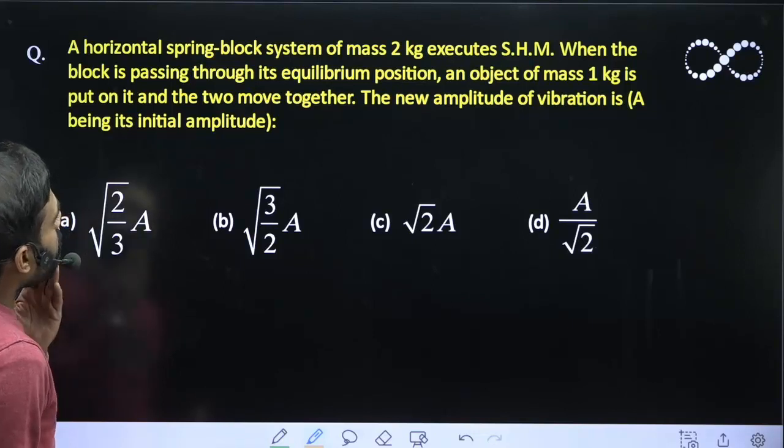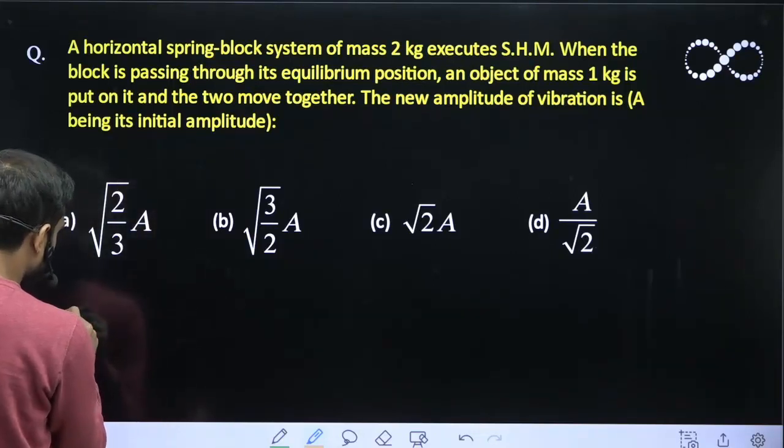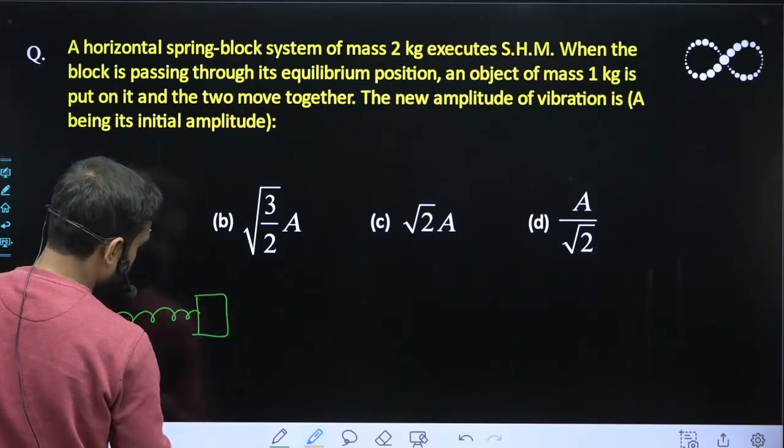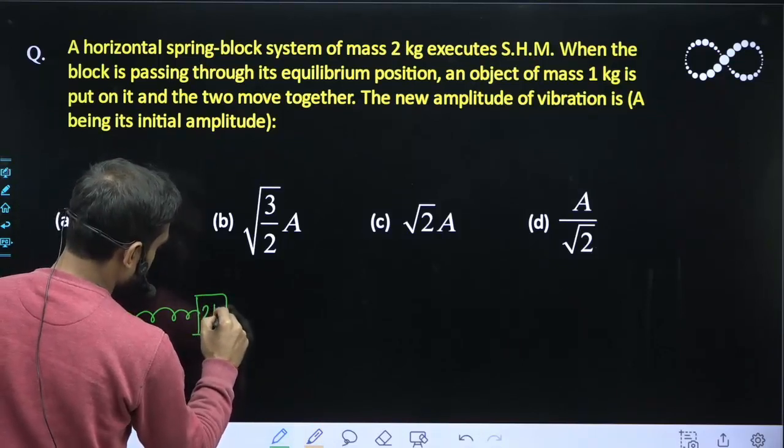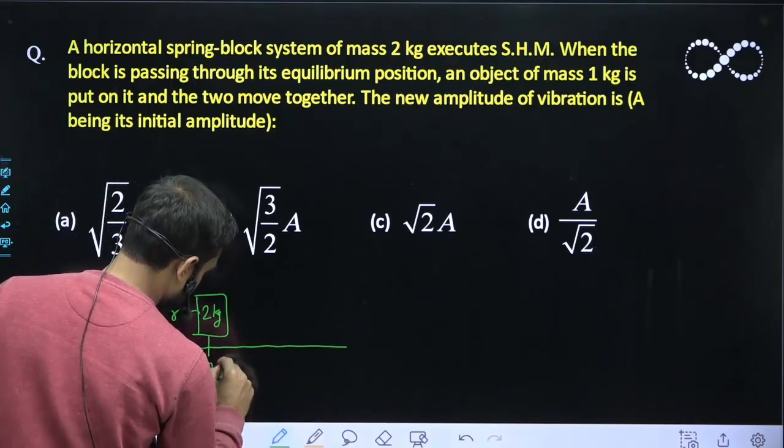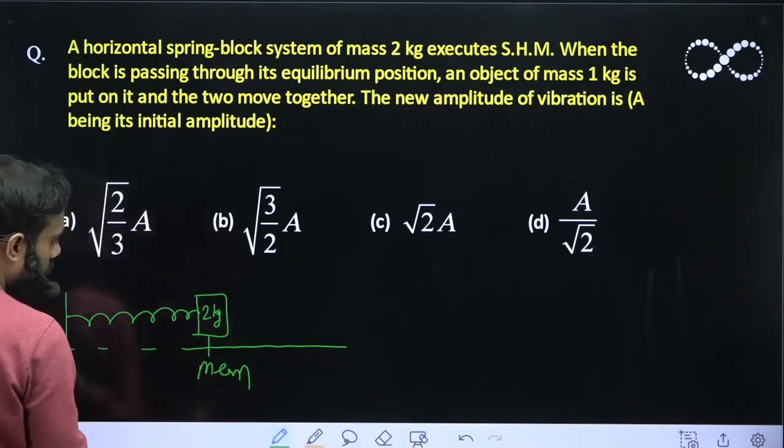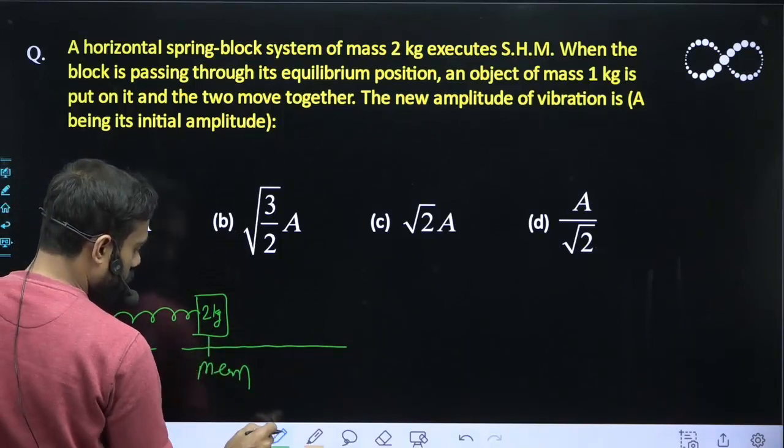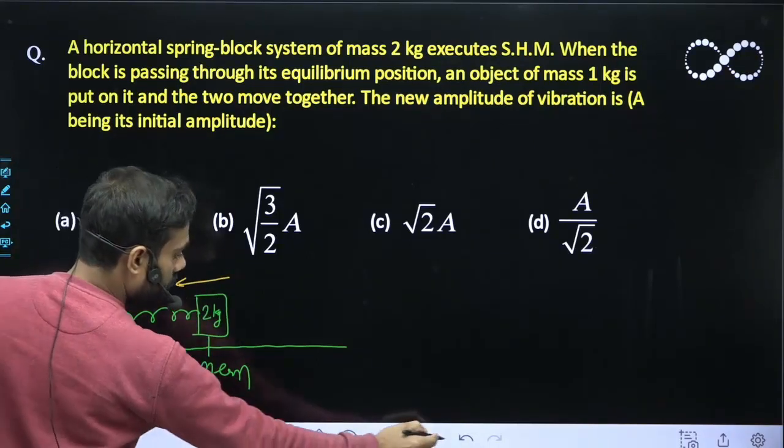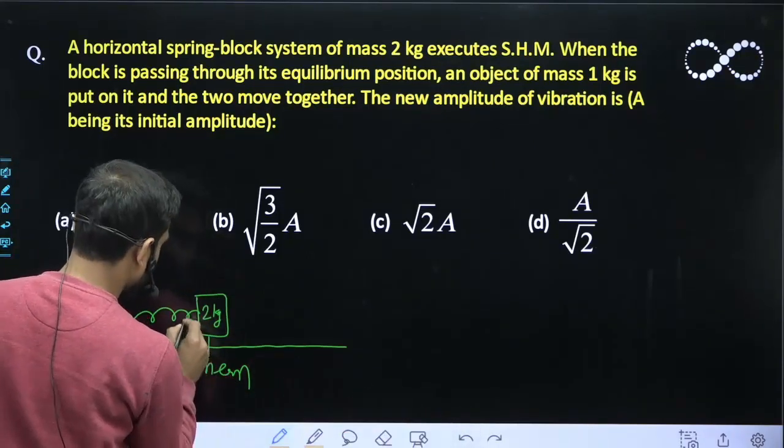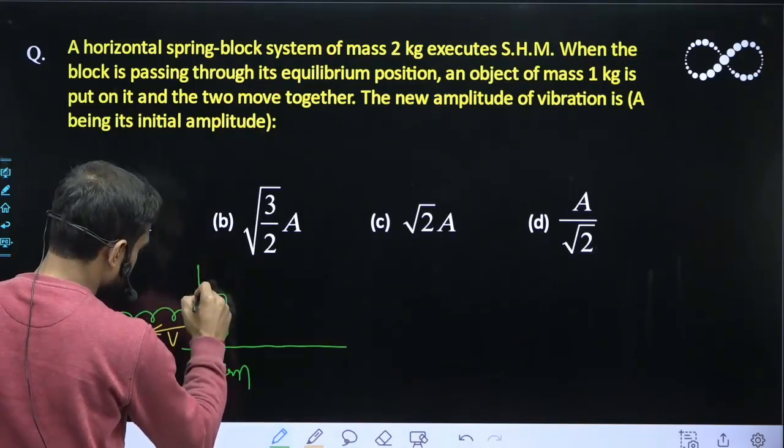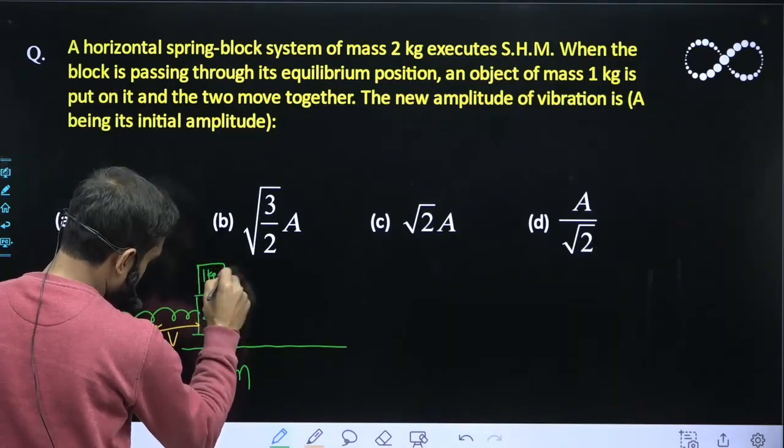Let us assume in the first case, the figure is something like this. This is the 2 kg block and suppose this is the mean position. And this is performing SHM, so assume this is moving with speed V. At this instant, another block of mass 1 kg is kept.